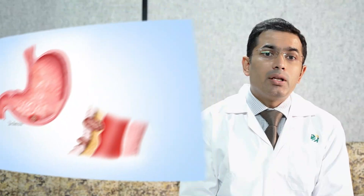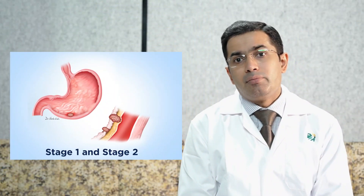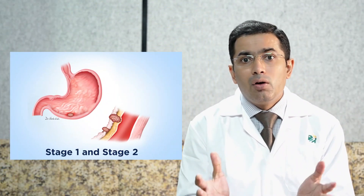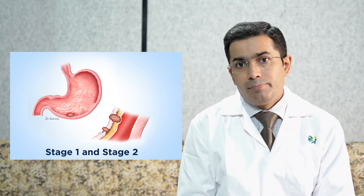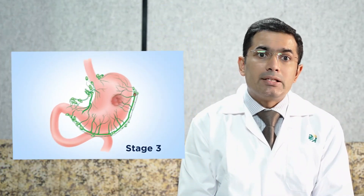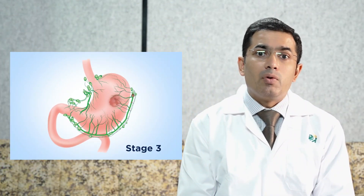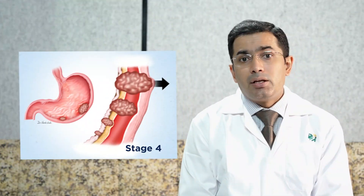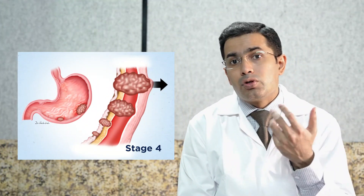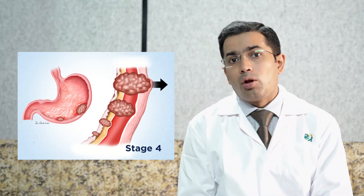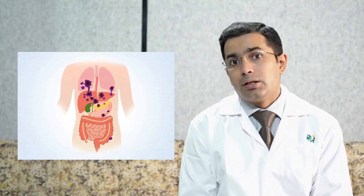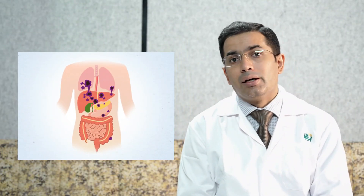Stage 1 and stage 2 stomach cancer means the tumor is confined within the wall of the stomach. In stage 3, the tumor has spread to the surrounding lymph nodes. In stage 4, the tumor has spread to lymph nodes outside the normal drainage area of the stomach, or it has spread to other organs such as the peritoneum, liver, or lung.